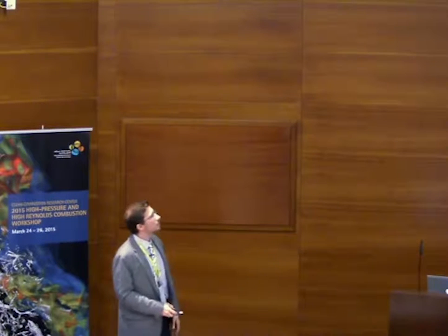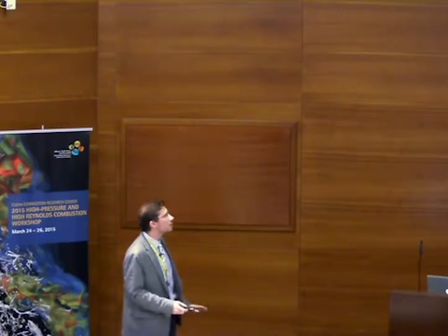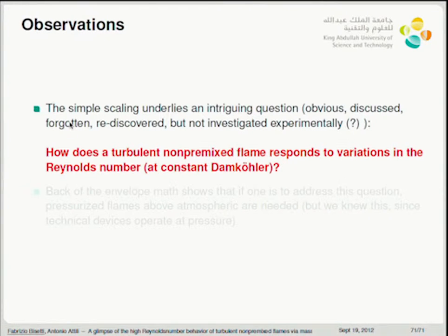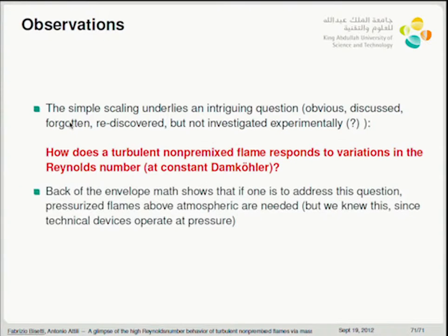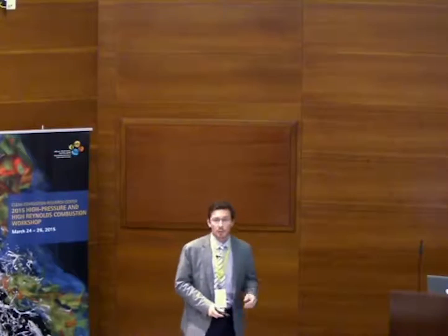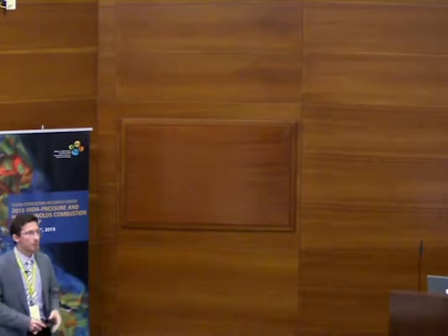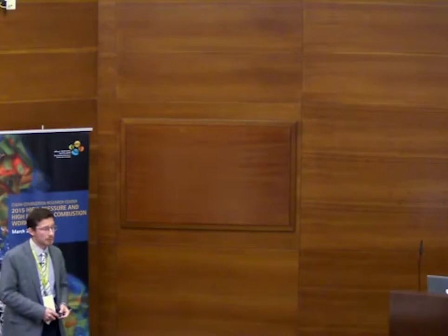To conclude: the simple scaling I've presented underlies an intriguing question that has been discussed, forgotten, and rediscovered — but not yet investigated experimentally: how does a turbulent non-premixed flame respond to variation in Reynolds number at constant Damköhler number? Back-of-the-envelope math shows that to address this question, pressurized flames are a must. We knew this already because technical devices operate at pressure — so we need to do this at pressure to access more realistic configurations.